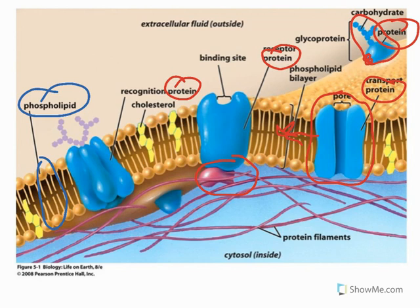Some important things to remember, especially with the phospholipids, are the two different properties. The head part — the little ball — is hydrophilic, so it is able to interact with the extracellular fluid outside the cell and the cytoplasm inside the cell, both of which are aqueous environments. The tails, this middle part here, are very hydrophobic, so they like to be away from all the water and sandwich themselves in between.